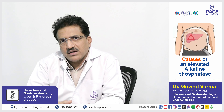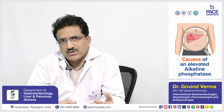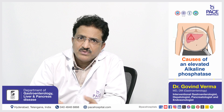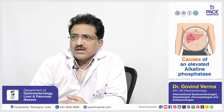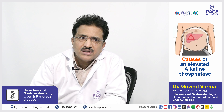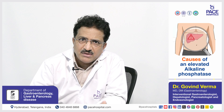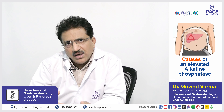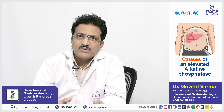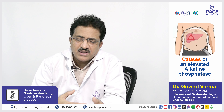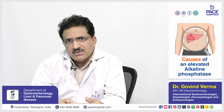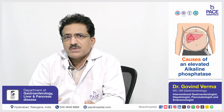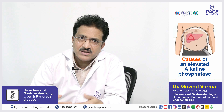Alkaline phosphatase can also be elevated due to hepatocellular causes such as drug-induced injury, autoimmune liver disease, cirrhosis, paracetamol toxicity, or ischemic hepatitis. A mixed pattern also exists where the patient has both hepatocellular damage and bile duct obstruction, resulting in elevation of both alkaline phosphatase and SGOT/SGPT.